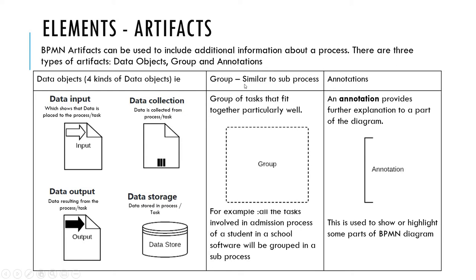The next kind of artifact is group, which is similar to a subprocess — a group of tasks that fit together particularly well. For example, all the tasks involved in the admission process of a student can be grouped in a subprocess. Next is annotation. Annotation provides further explanation to a part of the diagram and is used to highlight some parts of the BPMN diagram.